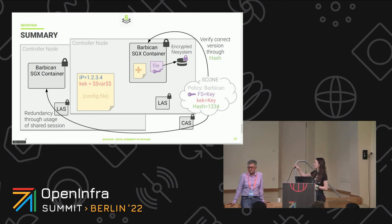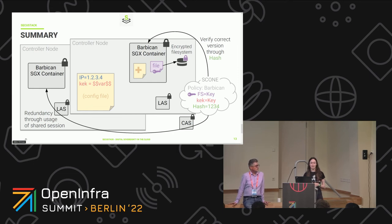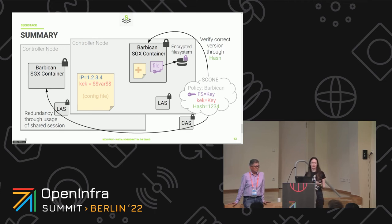If we use image V2, we have the same building process using the policy and the image, and then the measurement — because we have the correct image hash — says you can go. To summarize: the main thing is the policy in the CAS, which is in another SGX enclave. There we can store a key for a potential file system or any config variable used in a Barbican or any other container, always running the correct version. SCONE even checks your local hardware for the right SGX code, and if there's a security breach, it does not execute any container but waits for an update.